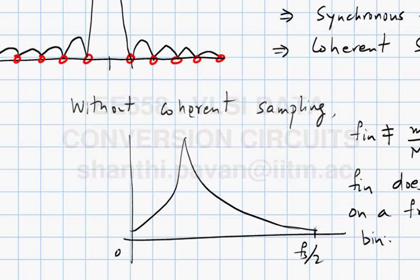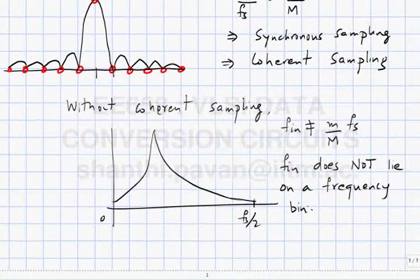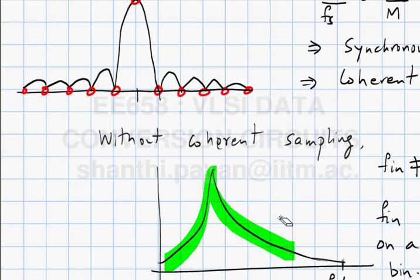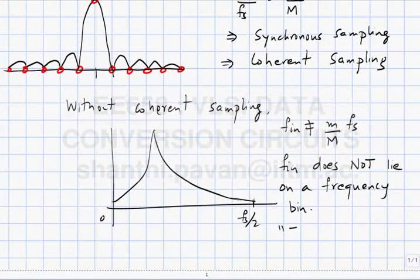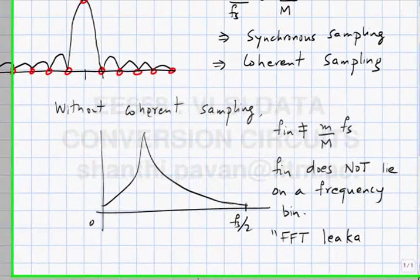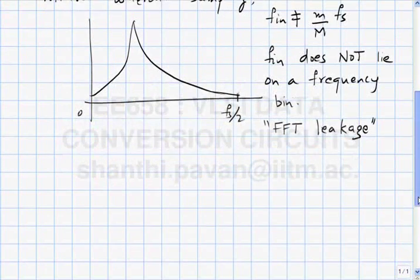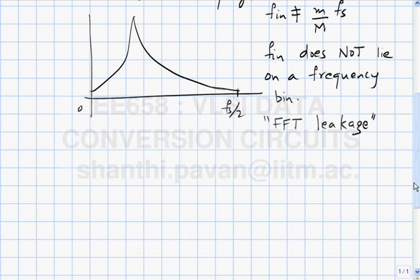This is often referred to as F_in not lying on a frequency bin. This phenomenon — where you see the Eiffel Tower spread — is also called FFT leakage. Because energy which is supposed to be confined to one bin is now spread across many bins. So energy is leaking off from the bin it is supposed to be in. This is called FFT leakage.